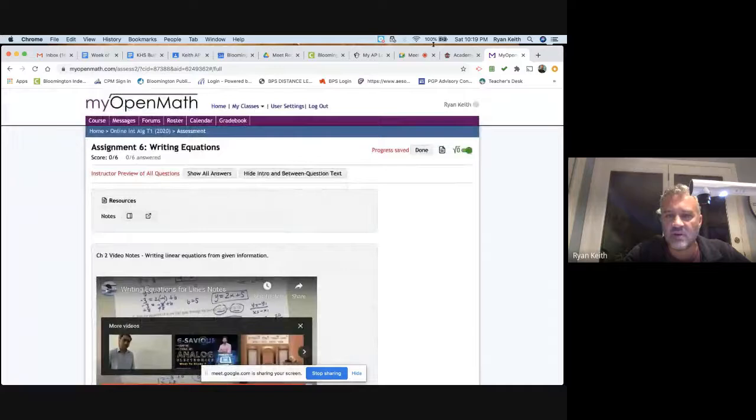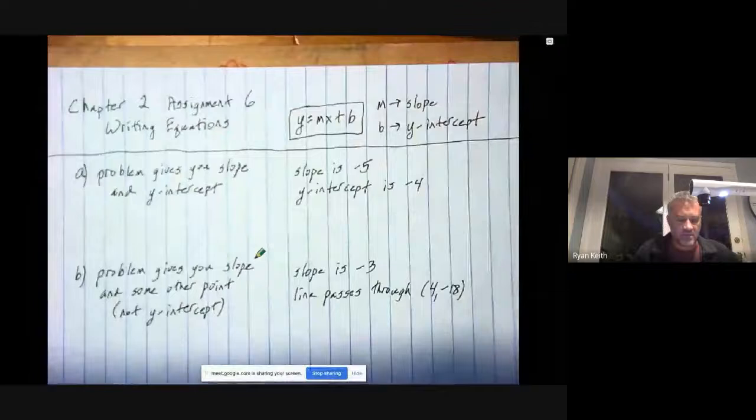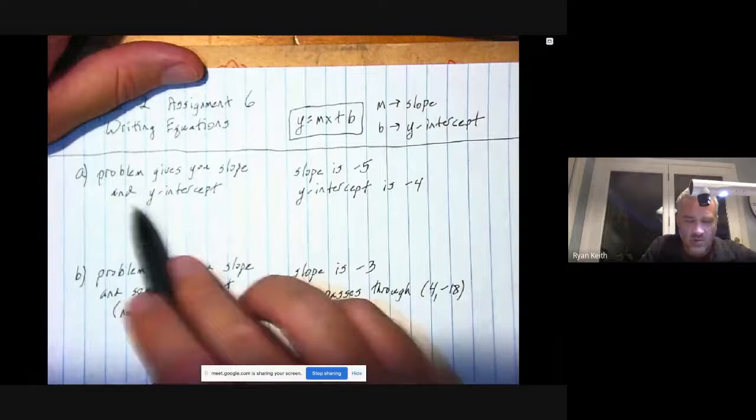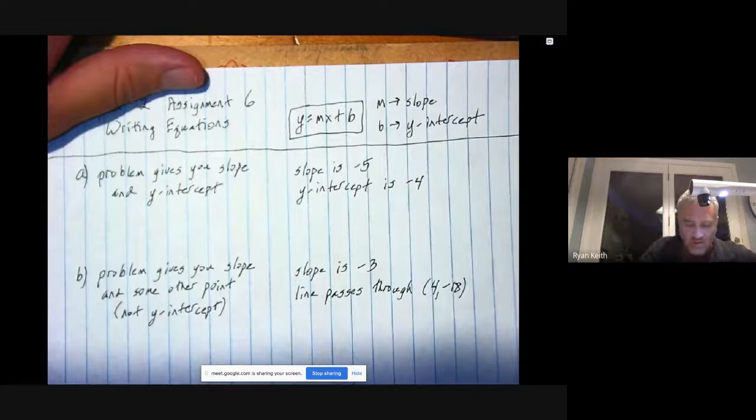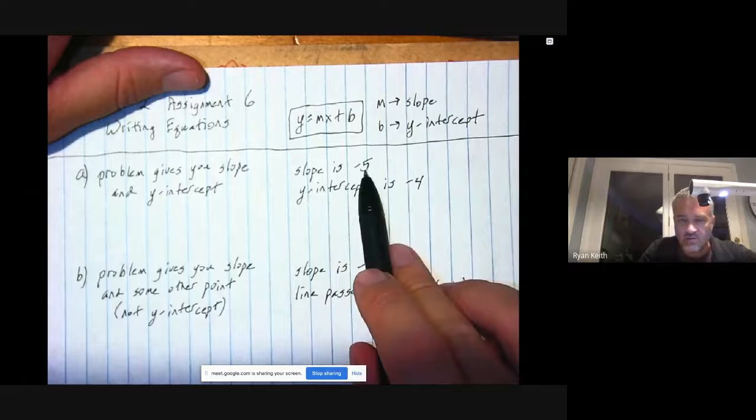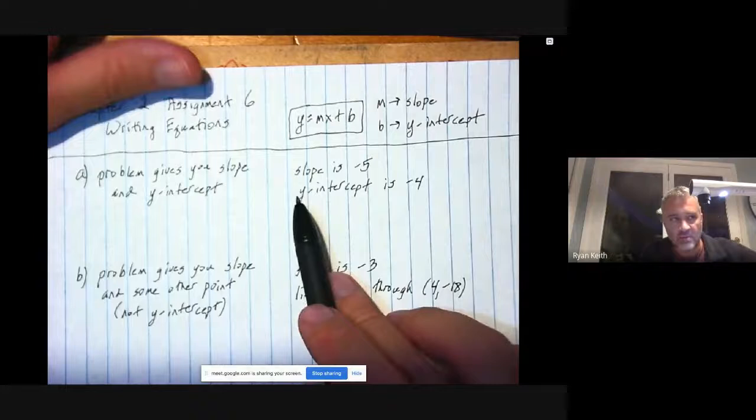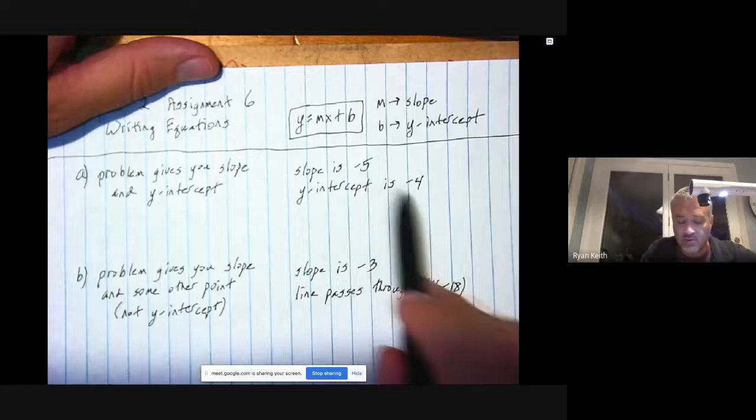Let's look at the first case where the problem gives you the slope and the y-intercept, and your job is to find the equation. What if you're told for a certain problem that the slope is negative 5 and the y-intercept is negative 4? I feel like this problem is almost insulting your intelligence because if they give you both of the ingredients that go in the equation, then it's just a matter of putting the number in the right spot.